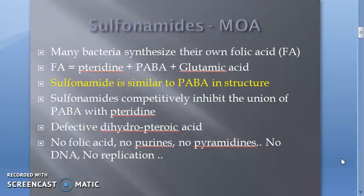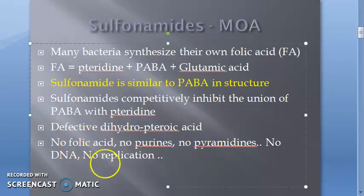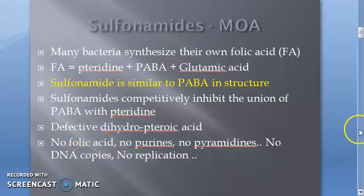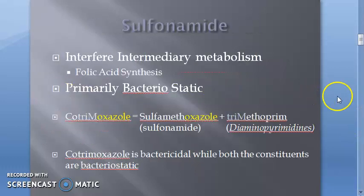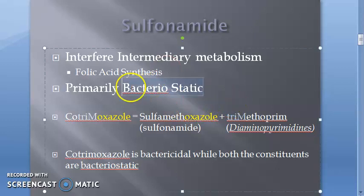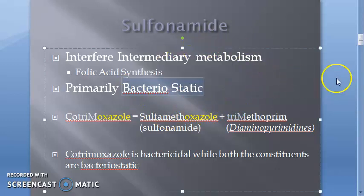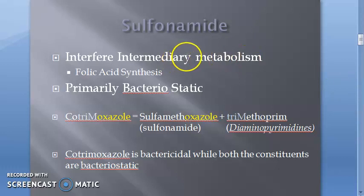Since the bacteria cannot make fresh folic acid, it will not be able to synthesize purines and pyrimidines, so there can be no DNA replication. No DNA copies, no replication — this is what makes it bacteriostatic. So sulfonamides interfere in intermediary metabolism, specifically folic acid synthesis.